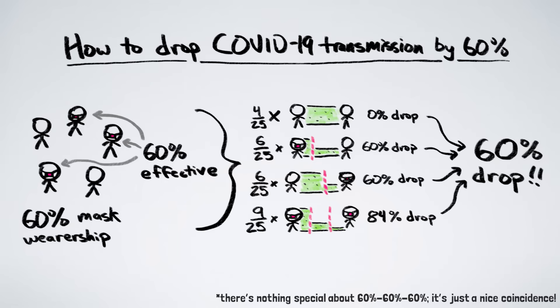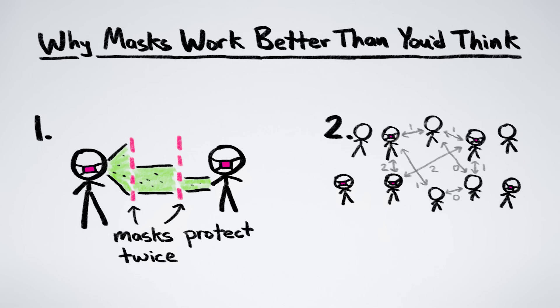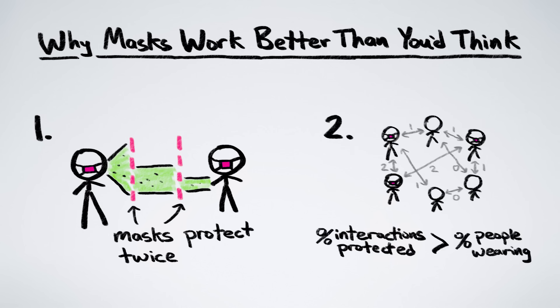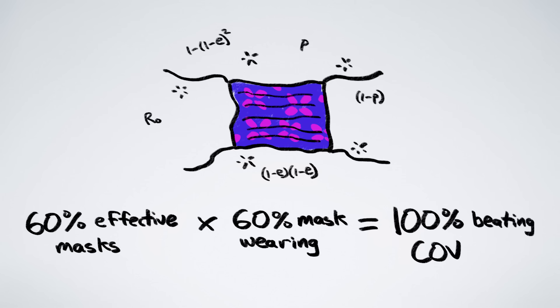The mask math shows us how. Specifically, it shows us that masks are more effective than you'd think, for two reasons. First, they do double duty when both people wear them. And second, the fraction of interactions involving masks is typically much higher than the fraction of people who wear masks. This is the magic multiplicative power of masks. Even partially effective masks, partially adopted, can extinguish an epidemic, as long as enough people wear them.